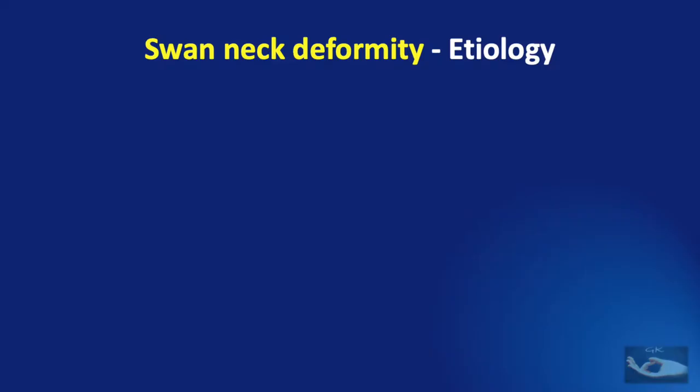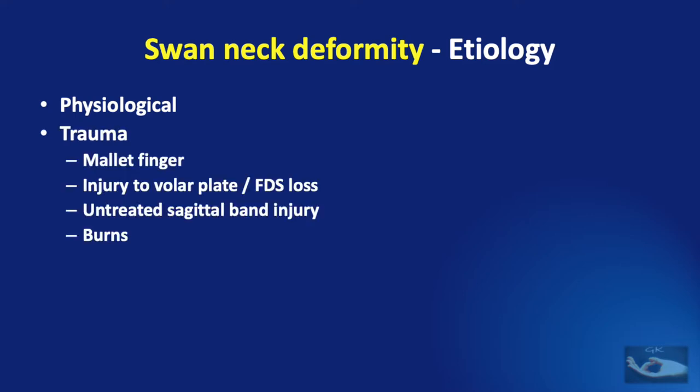The conditions in which this deformity presents are quite varied. It may actually be physiological in some people who have hyperextensile proximal interphalangeal joints due to volar plate laxity. Trauma can cause swan neck deformity in different conditions like a mallet finger injury, injury to the volar plate, flexor digitorum superficialis loss, or untreated sagittal band injury, or burns.